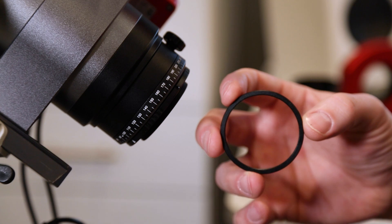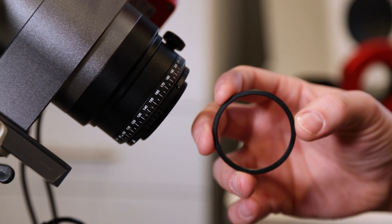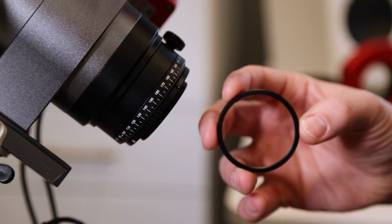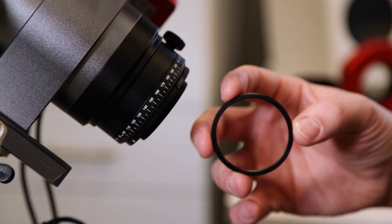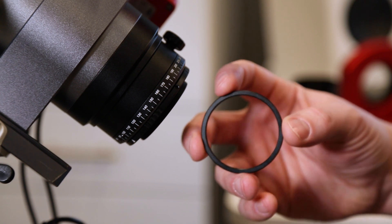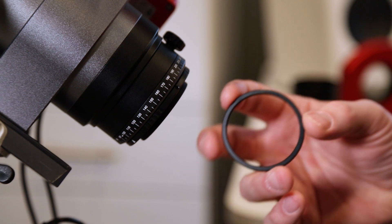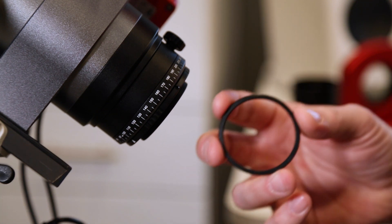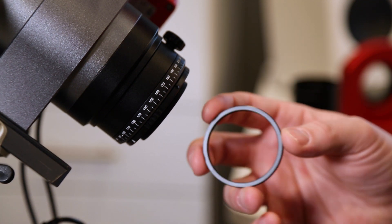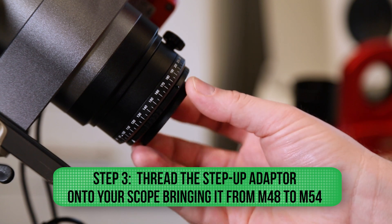ZWO makes an adapter to step from M48 up to M54 to attach the CAA to the telescope side of your setup. This adapter unfortunately is also an additional purchase. It is not included in the box. Hopefully ZWO will do that in the future. So we'll thread that on here.